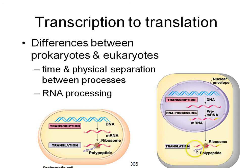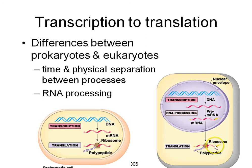Then the second part of making a protein is translation. After the messenger RNA leaves the nucleus, the messenger RNA hooks up to a ribosome. And using the codons — the sequence of three messenger RNA nucleotides — we bring in the right amino acids using transfer RNA.